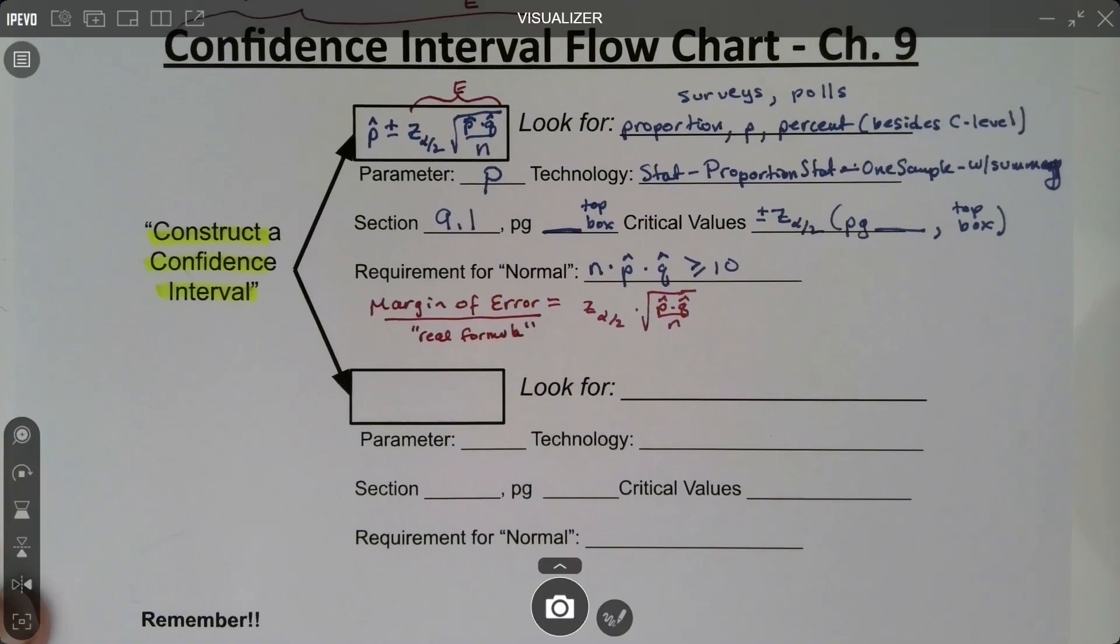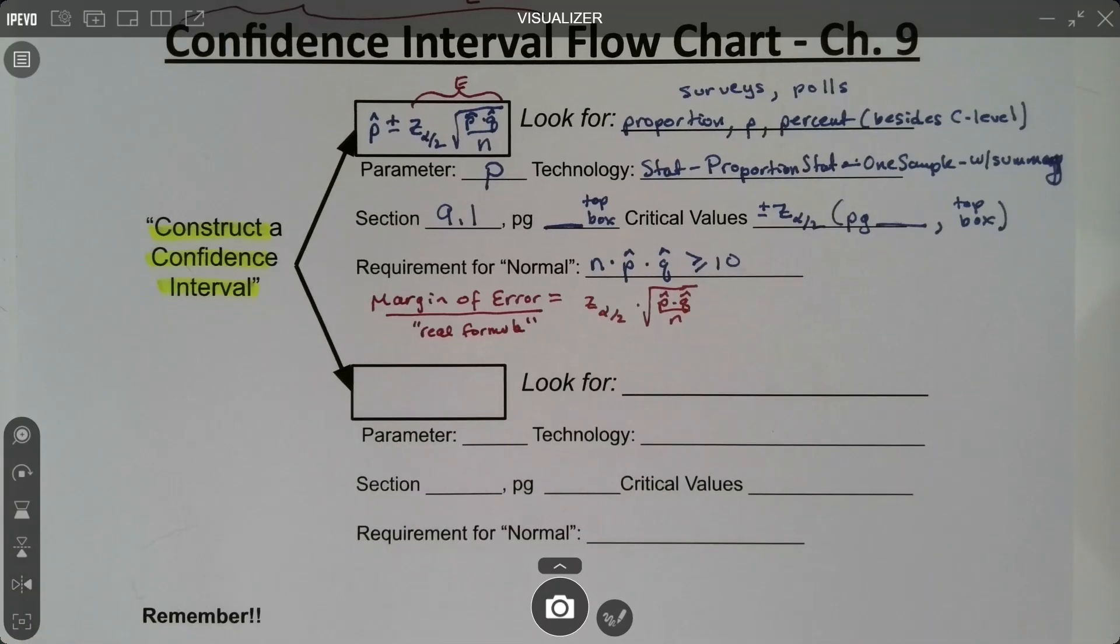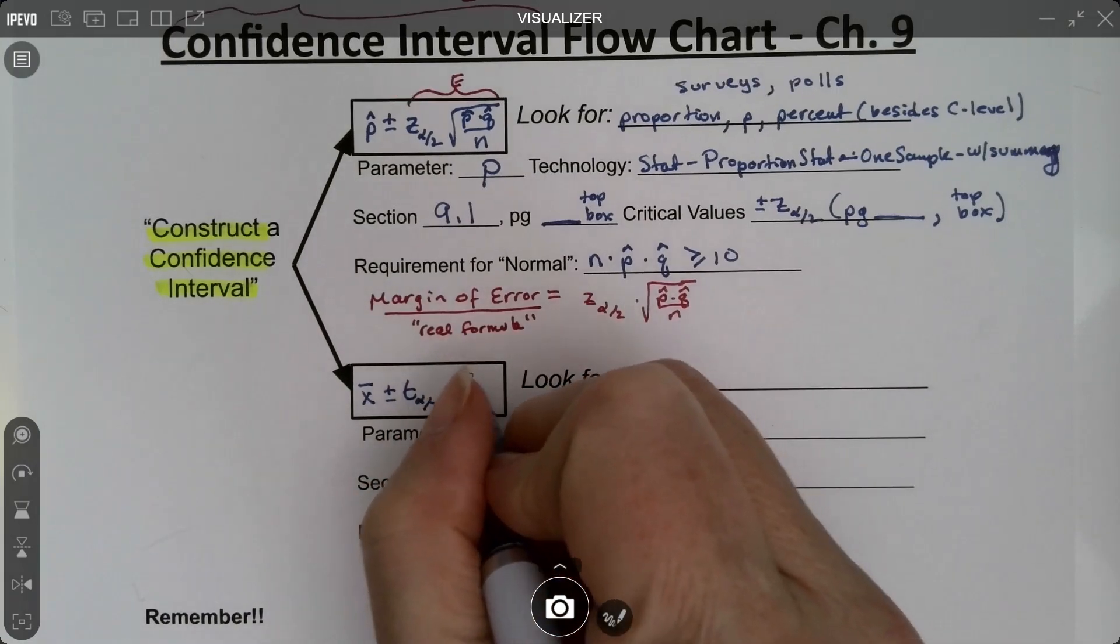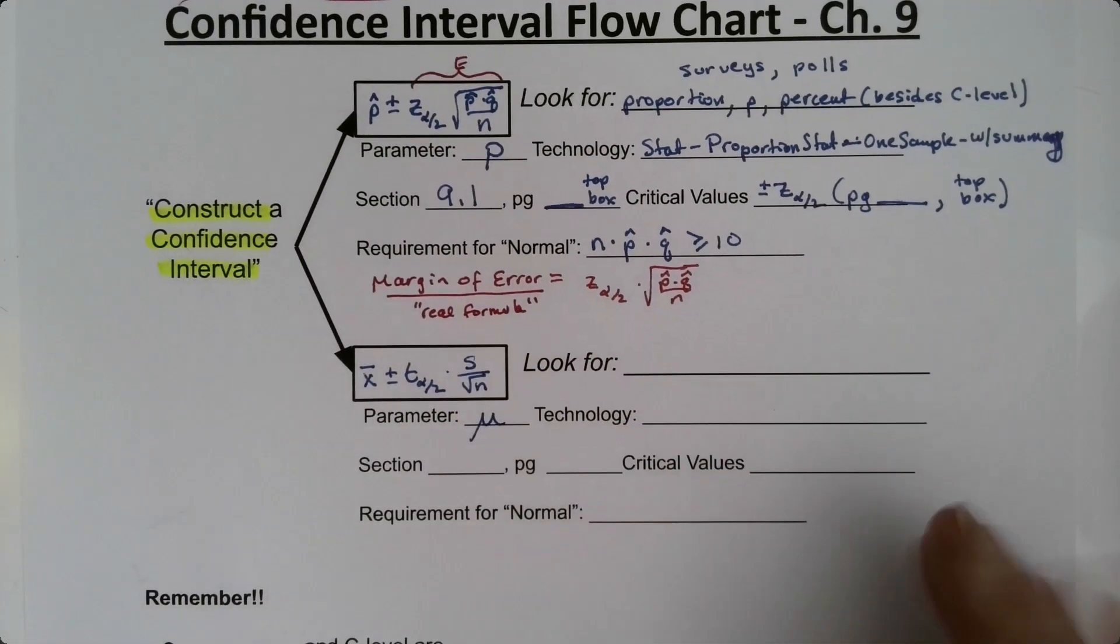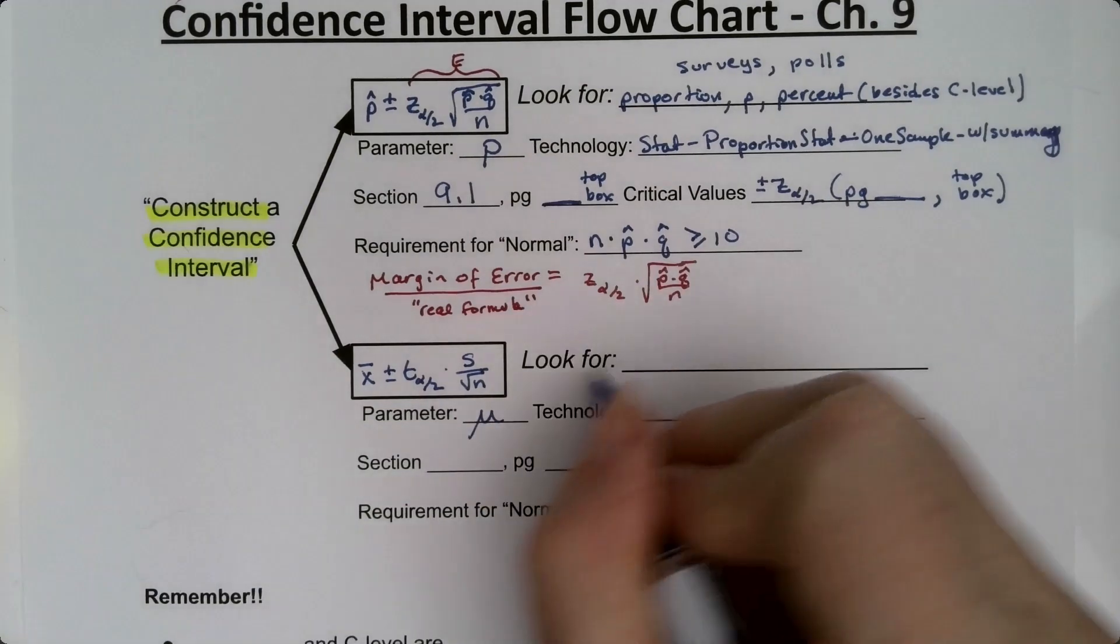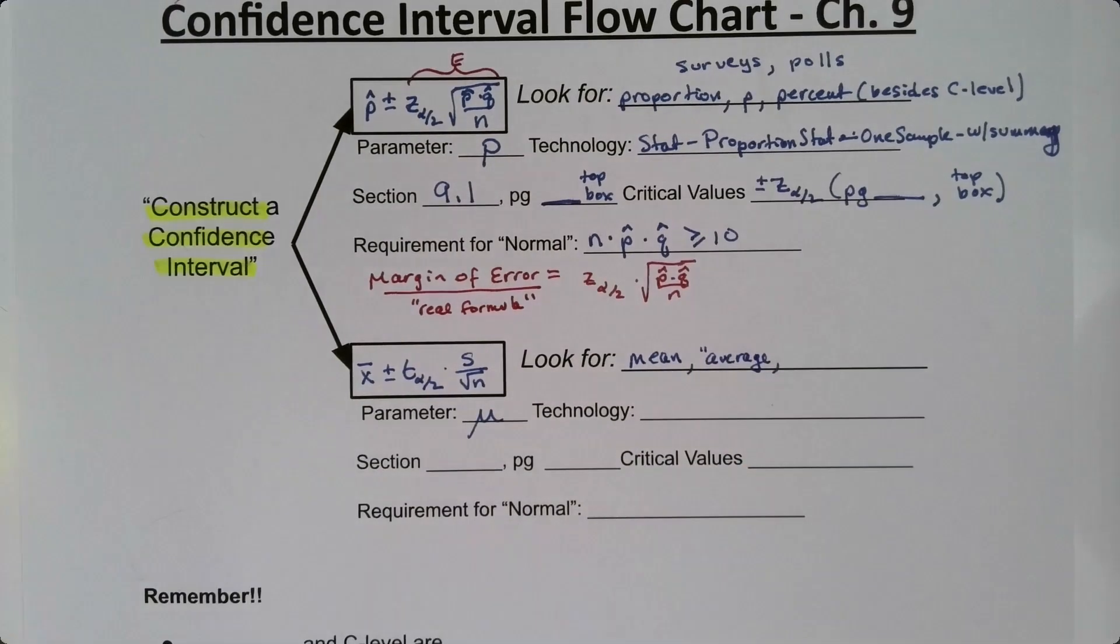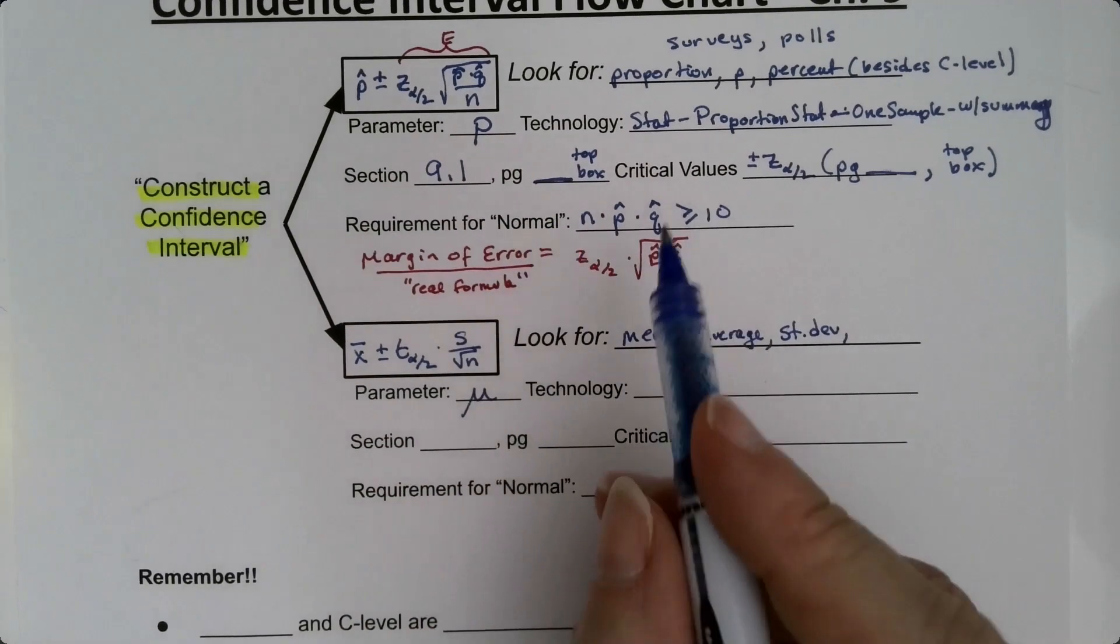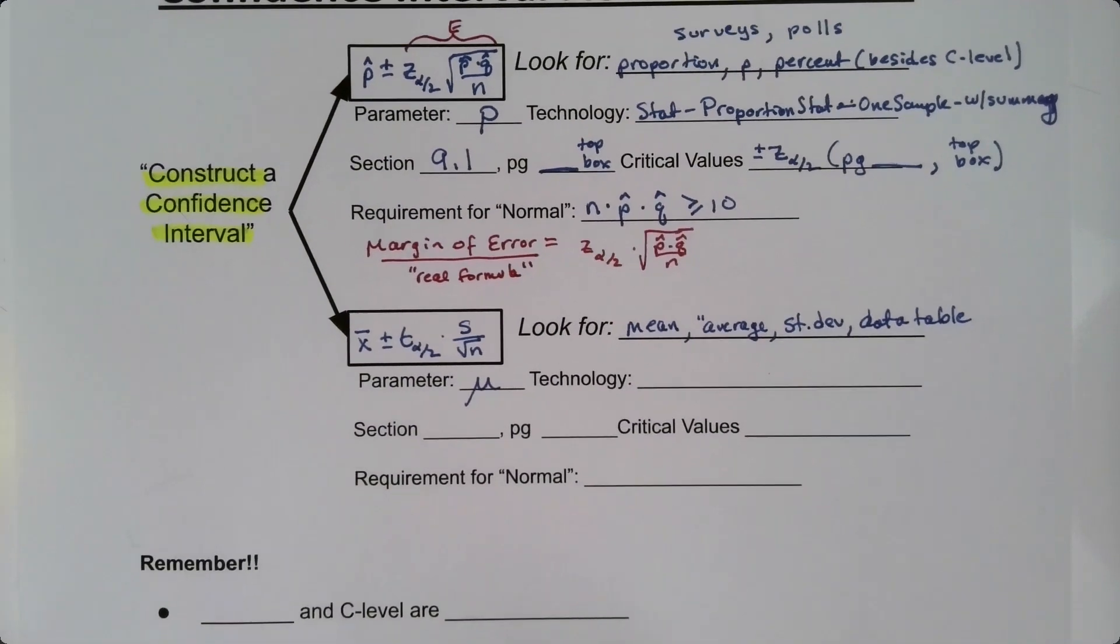Now that was one formula. What about the other one? Well, the other one is the one for mean, right? So for population mean, mu. Okay, so that would be x bar plus or minus T alpha over 2 times the S over the square root of N. Alright, so the parameter we're working with is mu. And so if you see what is mu, mu is the mean. So if you see the mean, if you see average, those terms, if you see standard deviation in the problem, if you have a data table, proportions don't come from data tables. So if you have a data table, if you have data in a table form, that's mean.